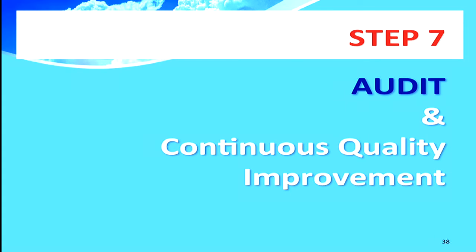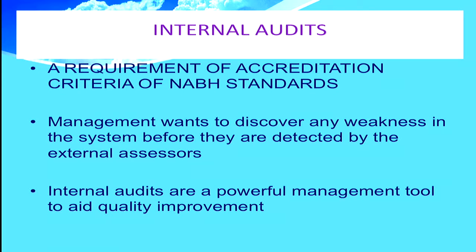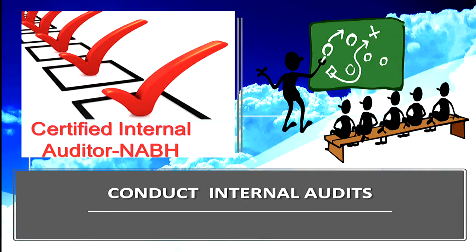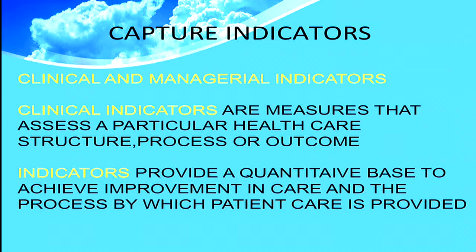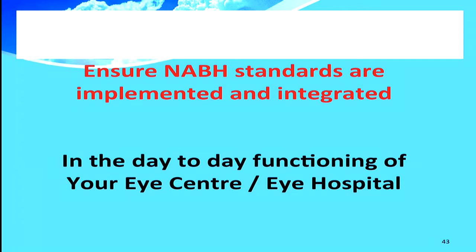Step seven is audit and continuous quality improvement. Internal audits are a requirement of the NABH accreditation criteria. Before the external assessor comes, management wants to discover any weakness and any opportunities to improve — they are a powerful management tool to aid quality improvement. At least two to three internal audits have to be conducted before the assessment. Based on internal audits, root cause analysis has to be done, and corrective and preventive action taken. The root cause analysis should not be a fault-finding mission. Capturing indicators — both clinical and managerial — is very important.